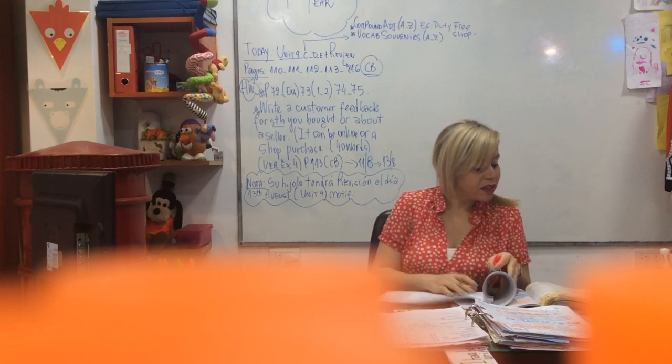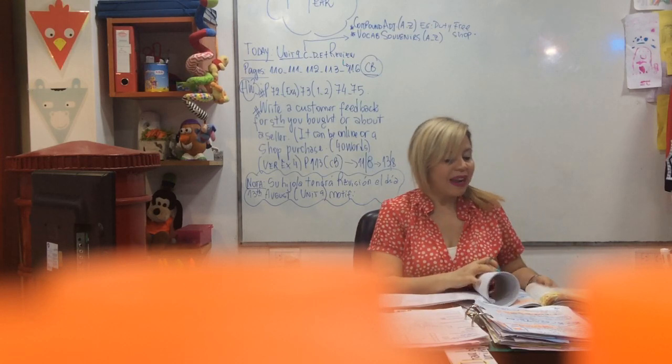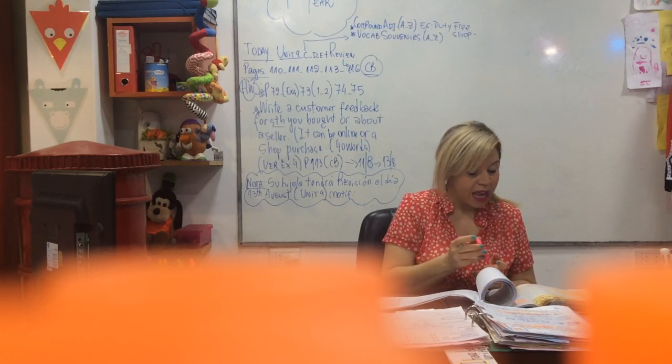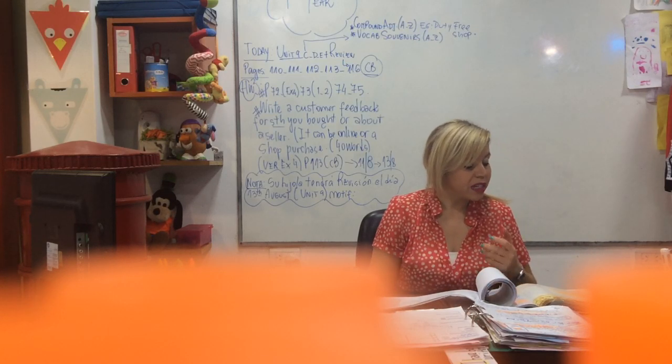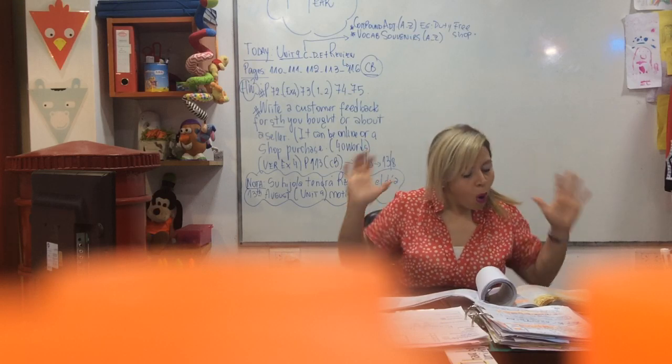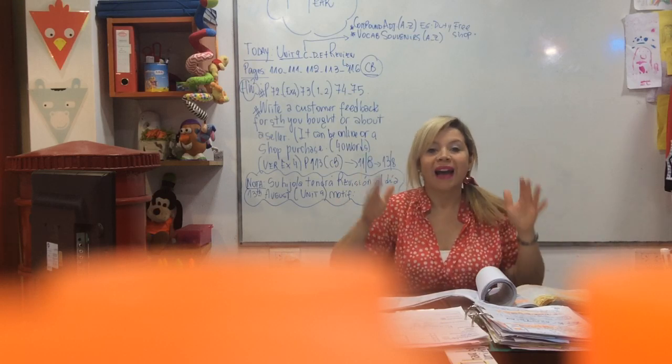Let's go to exercise three. Highlight all the charts in your book — mine is everything highlighted. Buying things vocabulary: return, exchange, receipt, gift wrapping, reference number, model name, in stock, available, delivery, and deals. All these words must be highlighted, and I want you to write one example sentence for each.